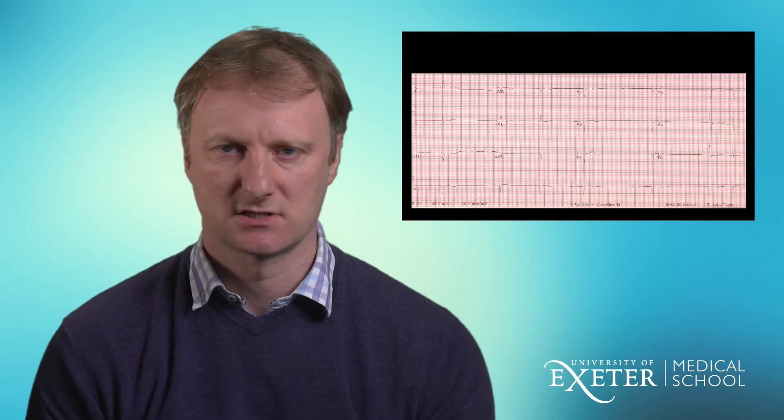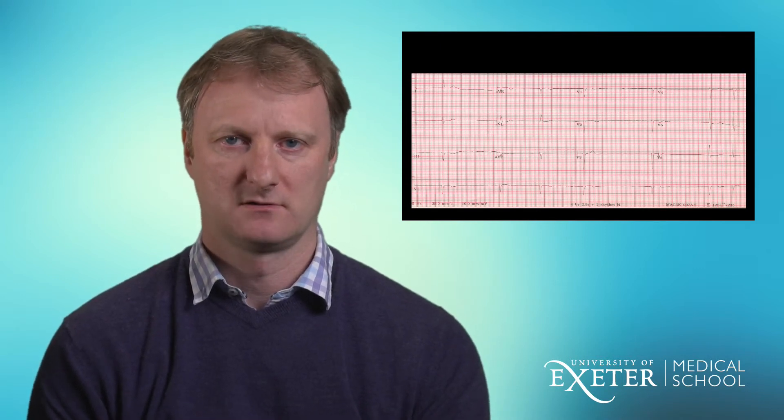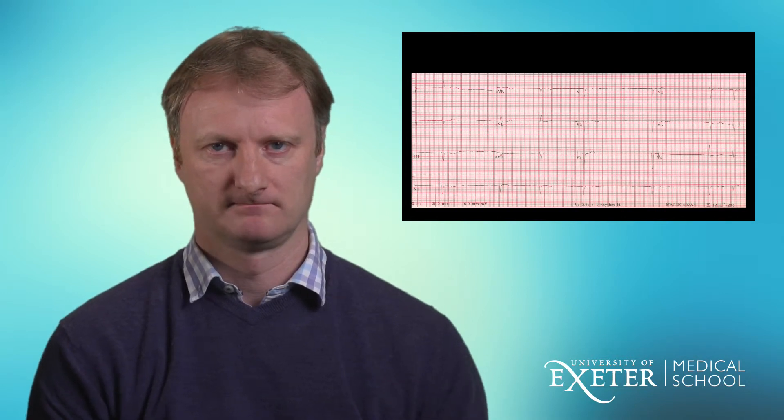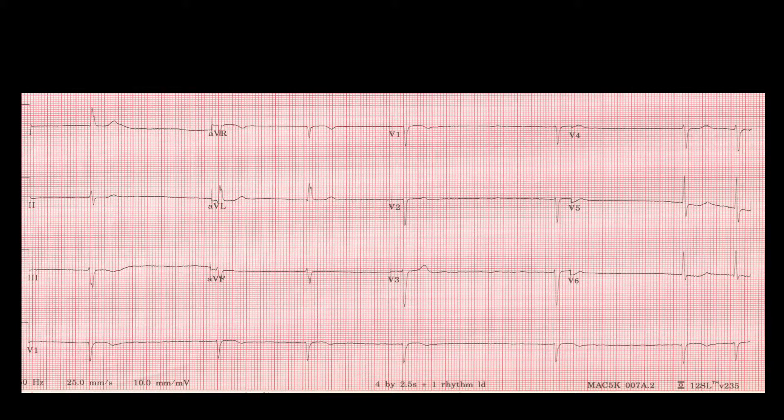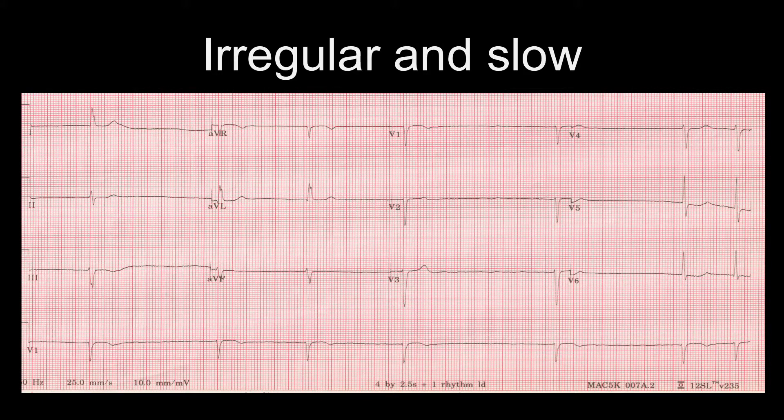Slow atrial fibrillation in itself does not require treatment unless the patient is symptomatic. If the patient is on high levels of rate control medication such as digoxin or beta blocker, this could be stopped to try and improve rate before consideration of other therapies such as a pacemaker if the patient is symptomatic.